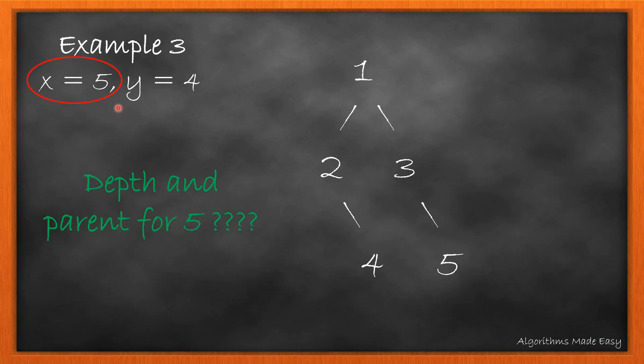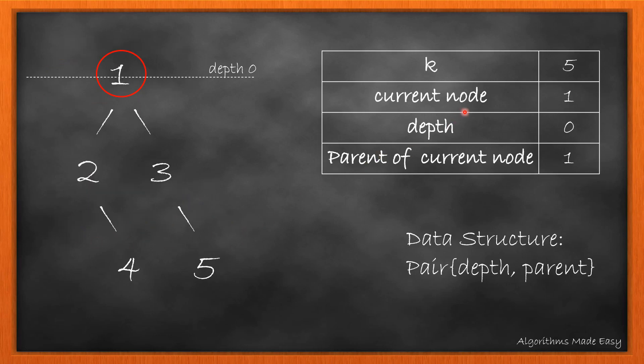Let's take the third example and find the depth and parent pair for node 5. Starting from root as current node, its depth will be 0 and parent will be root itself. We will also initialize the data structure pair to hold the depth and parent for a node.